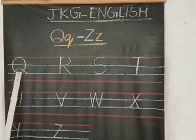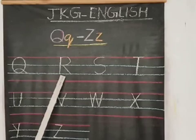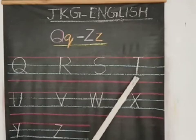Here I have written capital alphabets from Q to Z. Q for Queen, R for Rose, S for Ship, and T for Tomato.